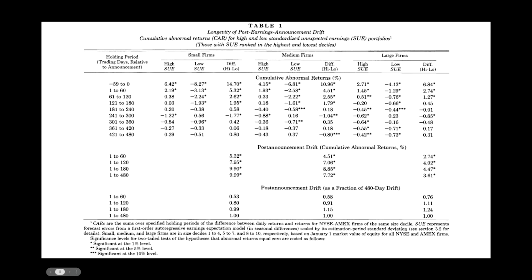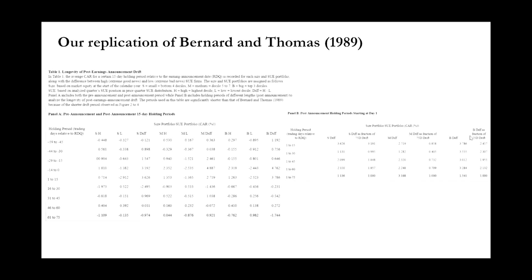Looking at Table 1 on page 14 of the paper, consider the holding period of 421 to 480 days — more than a year, during which there would have been multiple other earnings announcements. For high-SUE firms — those that beat analyst earnings expectations by the most — small firms seem to revert back starting at about eight months. For high-SUE big firms, the reversal happens even earlier, because bigger firms attract more institutional attention and have greater analyst followings, meaning their stock prices are priced in faster.